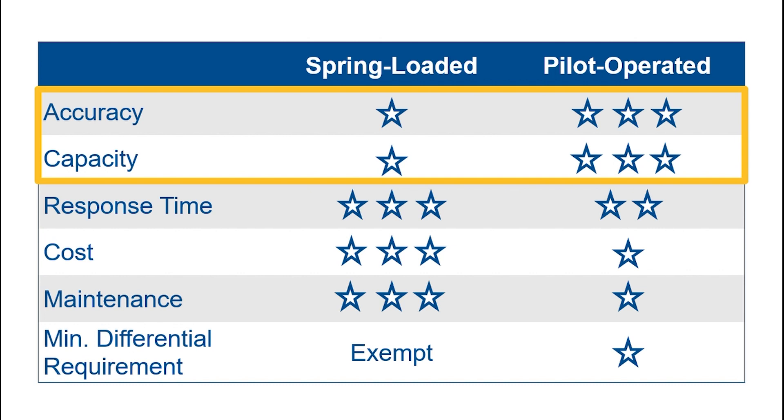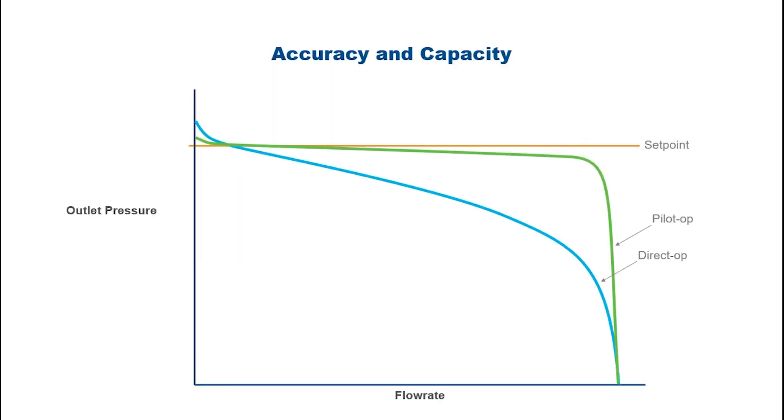The accuracy and capacity differences are best demonstrated with a regulator performance curve plotting outlet pressure versus flow rate. Both spring-loaded and pilot-operated regulators require the sensed outlet pressure to decrease below their set point to open and increase flow.